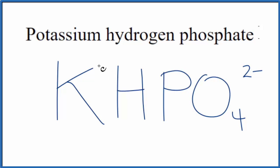So potassium is in group one on the periodic table. It has a 1 plus ionic charge. This hydrogen phosphate is 2 minus.